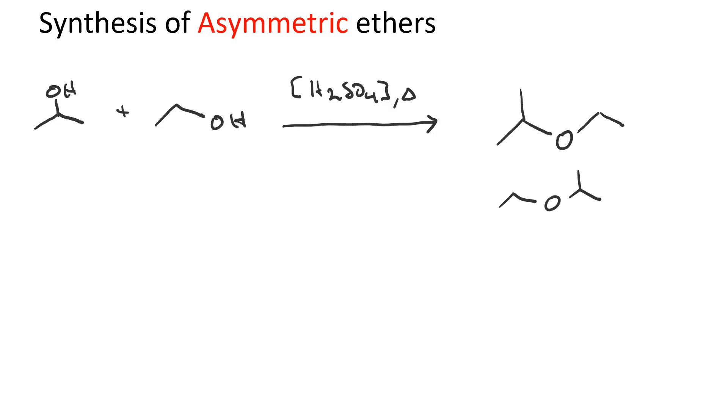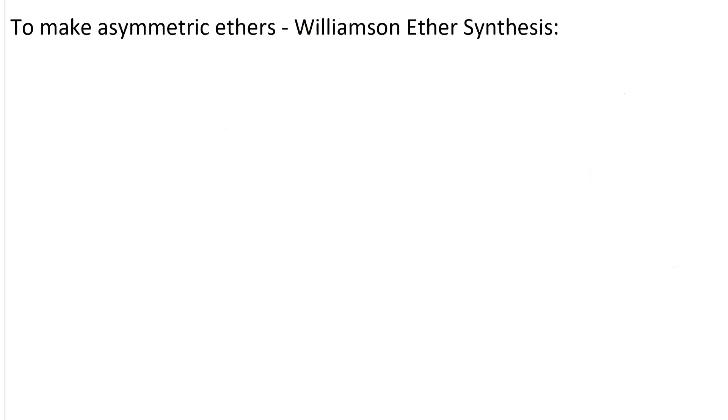So 50% of the time we'd get the desired product, but then 25% of the time we'd get diisopropyl ether, and 25% of the time we'd get diethyl ether. 50% just isn't good enough. We can do better. The crucial step of a Williamson ether synthesis, which is the procedure for making an asymmetric ether,